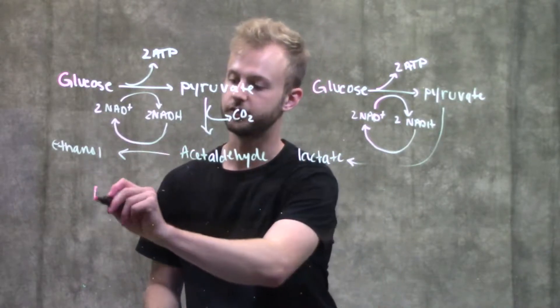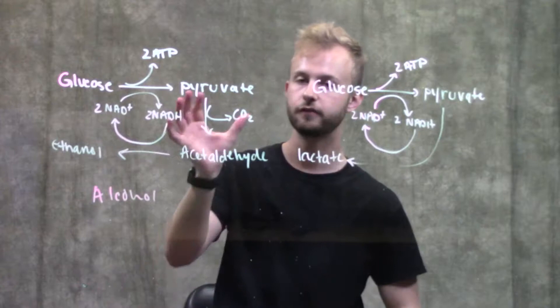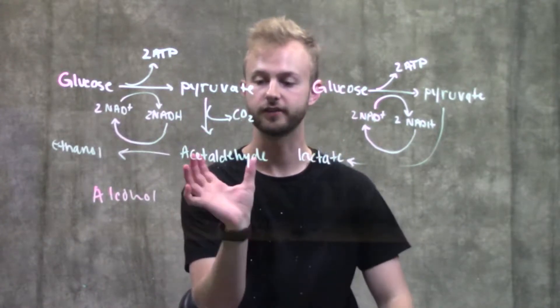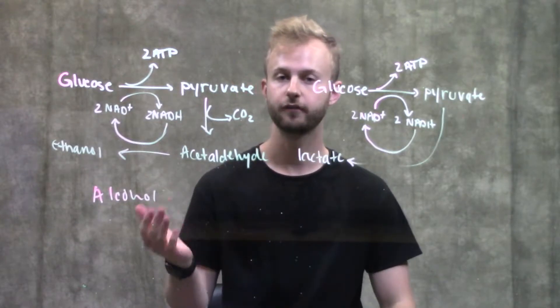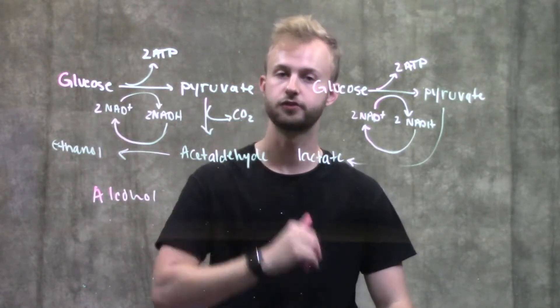In alcohol fermentation, we have to convert pyruvate into acetaldehyde before we can feed it into the fermentation pathway. When we convert pyruvate to acetaldehyde, we lose a molecule of CO2.